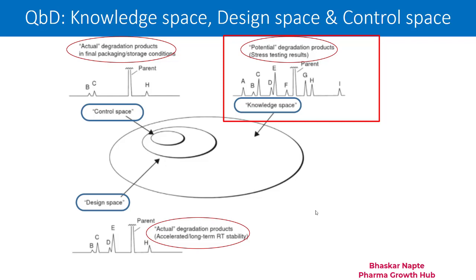There are four different kinds of stress testing. The first one is hydrolytic stress testing, where the interaction of water molecules with your principal analyte can be seen. You also need to understand the interaction across the entire pH range, starting from acidic to alkaline. Hydrolytic degradation is not only about the interaction of water with the molecule, but also the interaction at acidic pH and alkaline pH. So there are three important interactions: acidic hydrolysis, alkaline hydrolysis, and water hydrolysis.